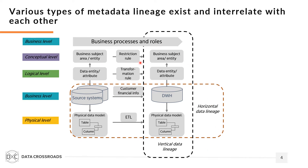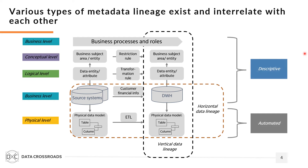The second classification is the direction of documentation — horizontal or vertical. Horizontal data lineage links objects along one or more layers. Vertical data lineage links objects between various layers. The third type of classification is based on the method used to document data lineage. Descriptive data lineage is recorded manually in a repository. Automated data lineage is the method to record metadata lineage by implementing automated processes to scan and ingest metadata into a repository.